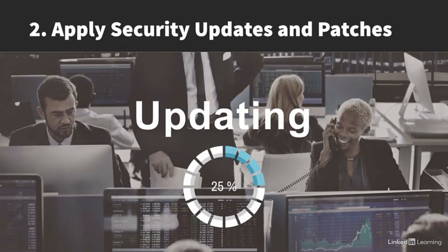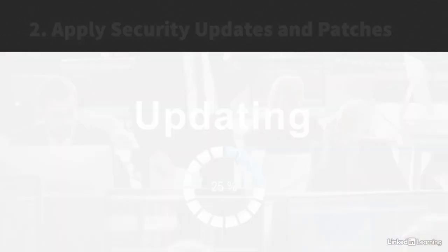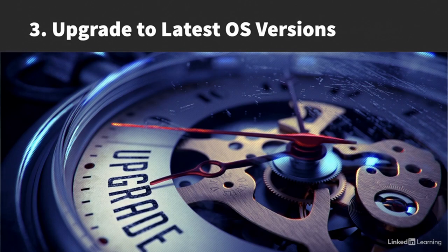Second, apply security updates and patches. Malware and ransomware can only work on systems that are vulnerable to their attacks. You can significantly reduce your exposure by making sure your systems have all their security updates and patches. Next, upgrade to the latest operating system versions. If you've been putting off upgrading your operating systems, you could be exposing yourself to vulnerabilities that don't have patches. Plus, current operating systems are often designed to be more secure than previous versions.